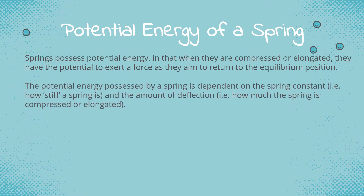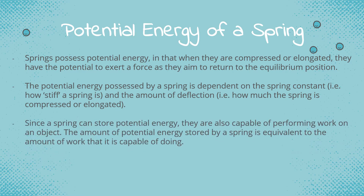The potential energy possessed by a spring depends on something called the spring constant, which describes how stiff a spring is. The spring constant is related to how much deflection the spring undergoes — the amount by which it has been elongated or compressed. Multiplying this deflection by the spring constant gives us a force. Since a spring can store potential energy, it is possible for a spring to perform work on an object.